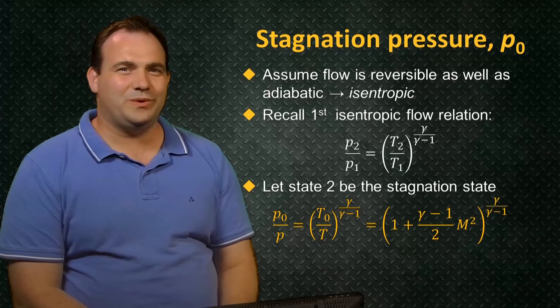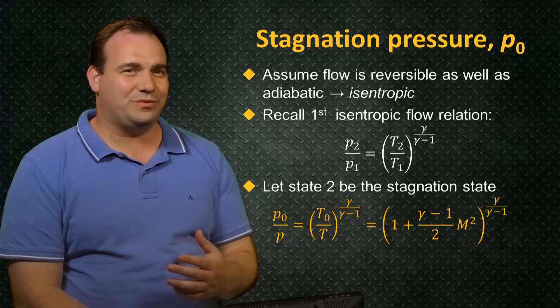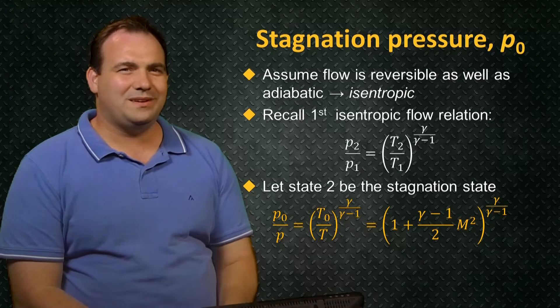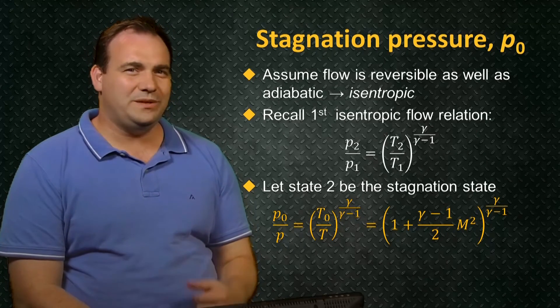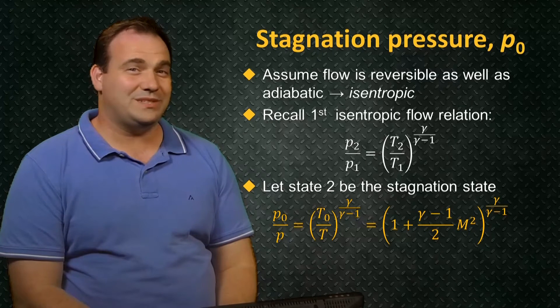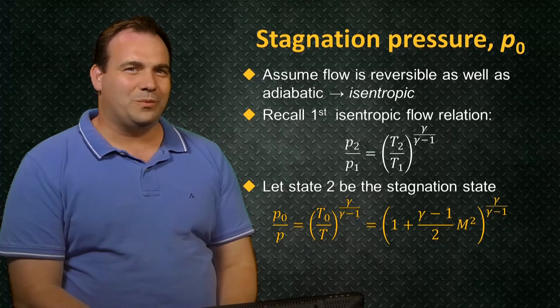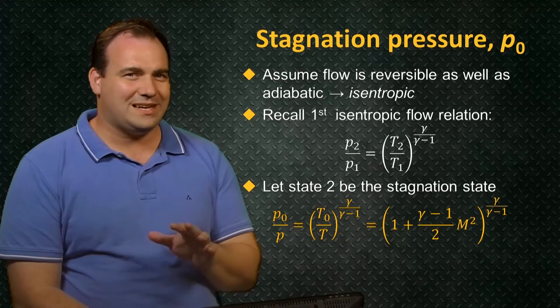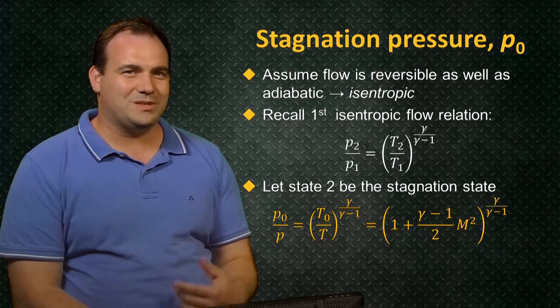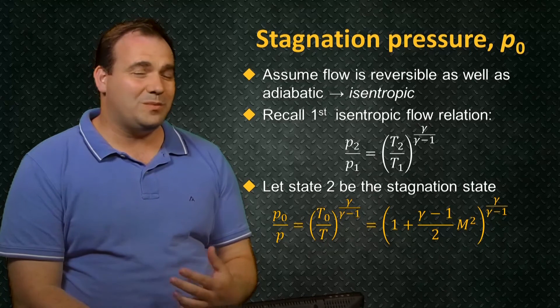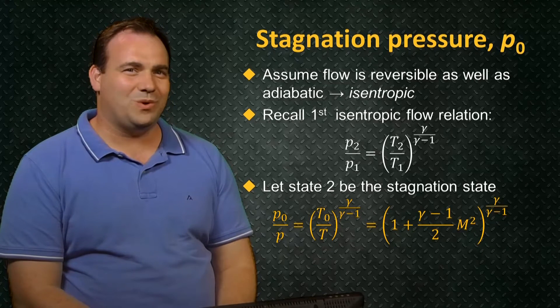Let's make state 2 in this relation the stagnated flow state, and state 1 the state when the flow is at a Mach number of M. If we use the expression for T0 over T from the last unit, we see that the stagnation to static pressure ratio is given by 1 plus gamma minus 1 over 2, times the Mach number squared, all to the power of gamma over gamma minus 1.